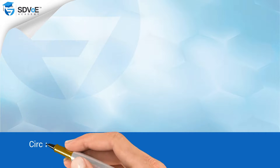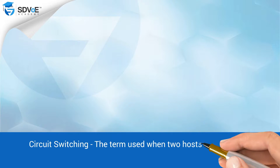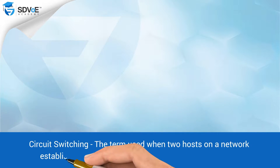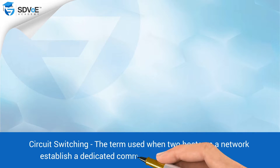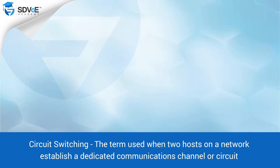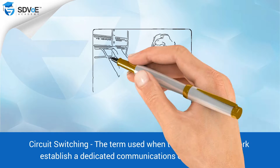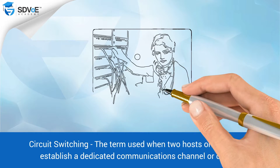Circuit switching is the term used when two hosts or devices on a network establish a dedicated communications channel or circuit. Once this has been achieved, the hosts are unable to send messages to each other.